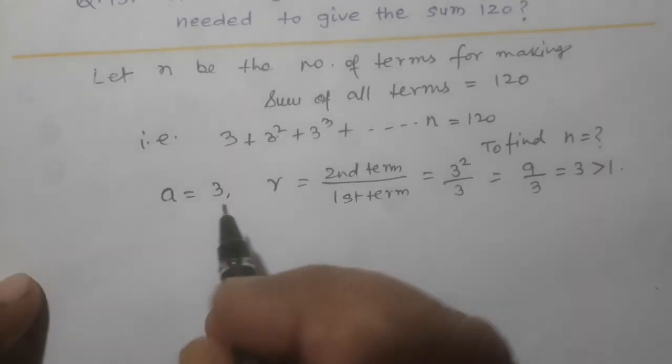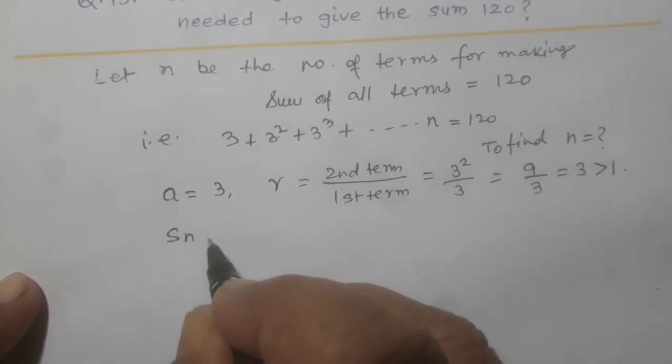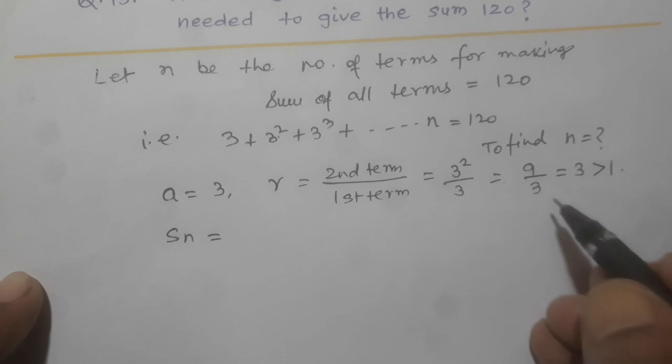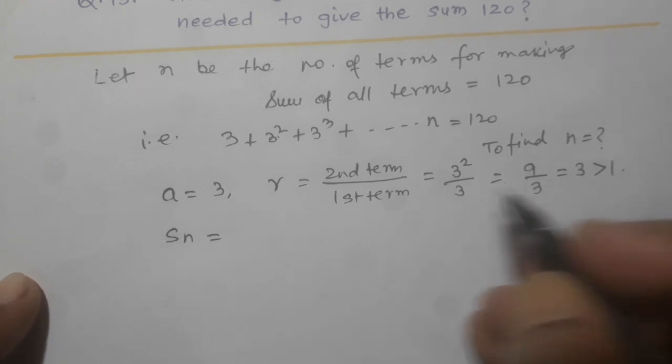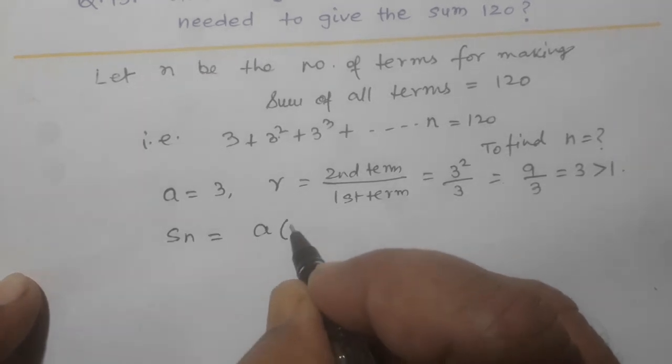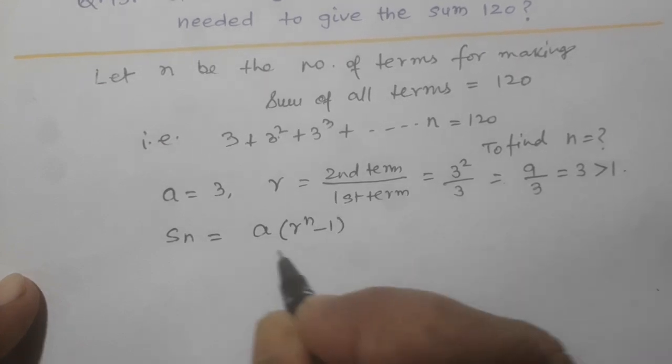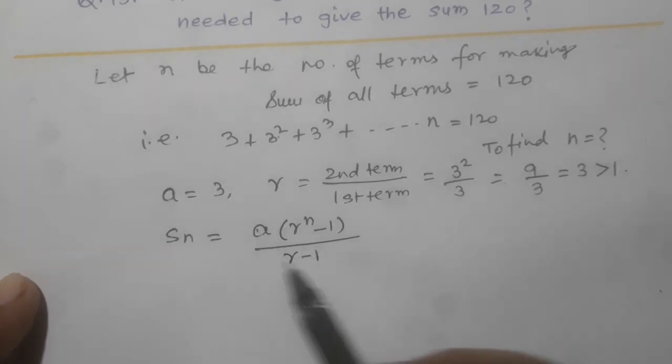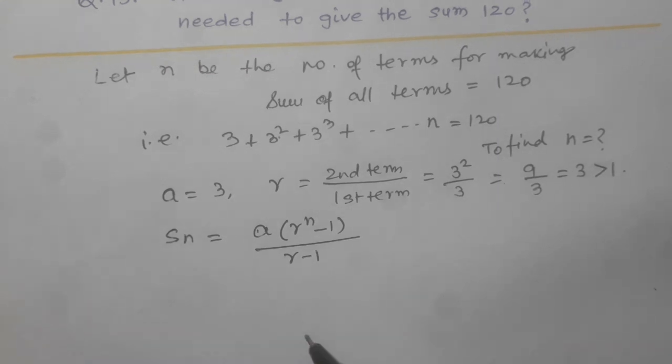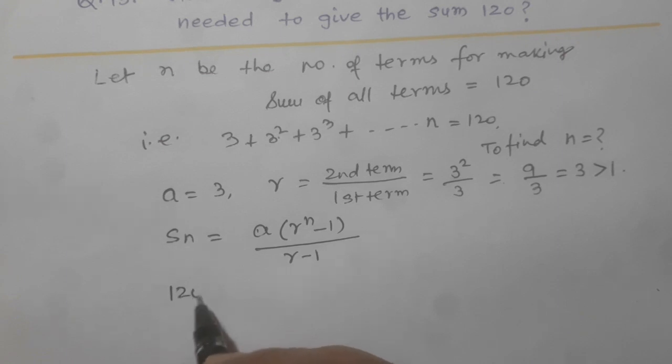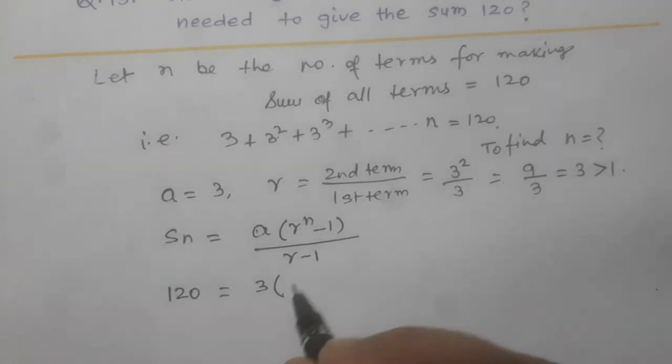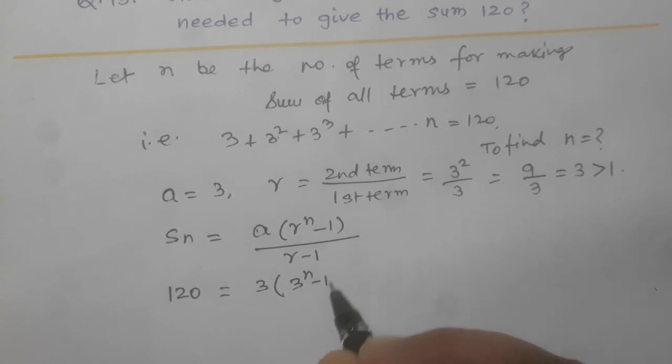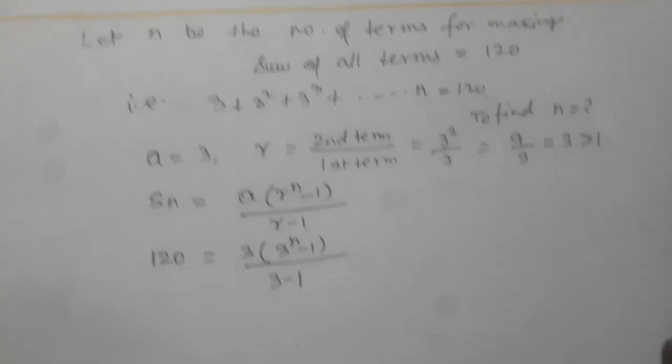So sum of nth term Sn, when R is greater than 1, the formula is A into R power n minus 1 divided by R minus 1. By putting the value A and R in this equation, Sn is equal to sum of nth term is equal to 120. So at the place of Sn we shall write 120, A is equal to 3, R is equal to 3.